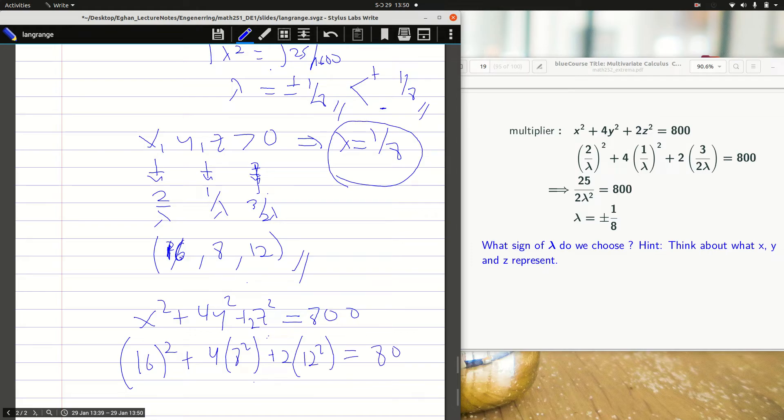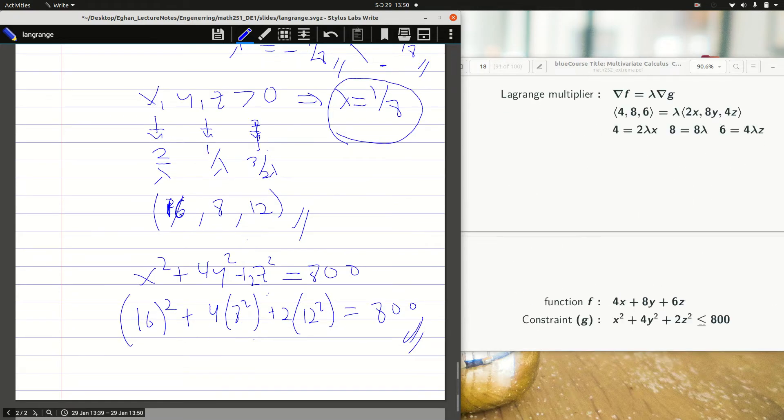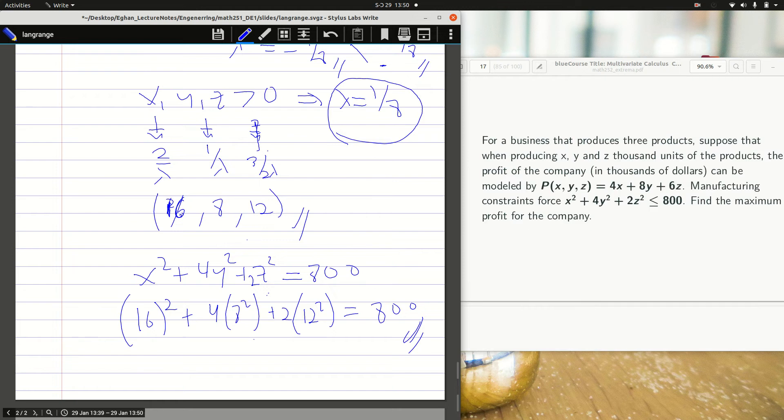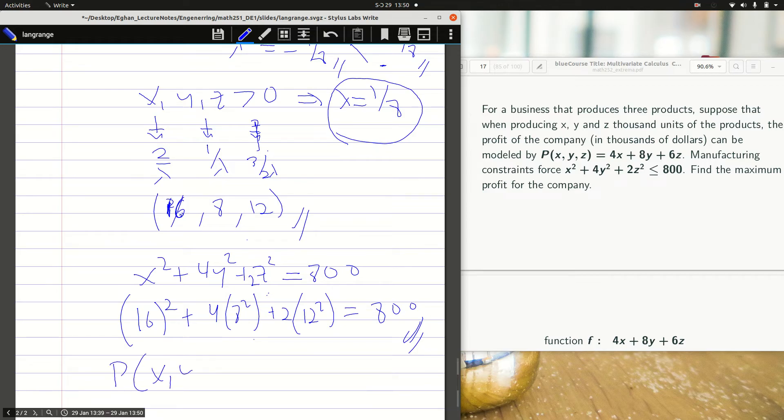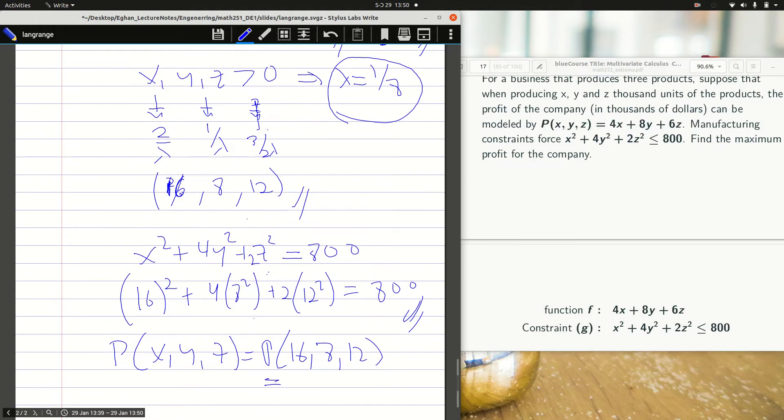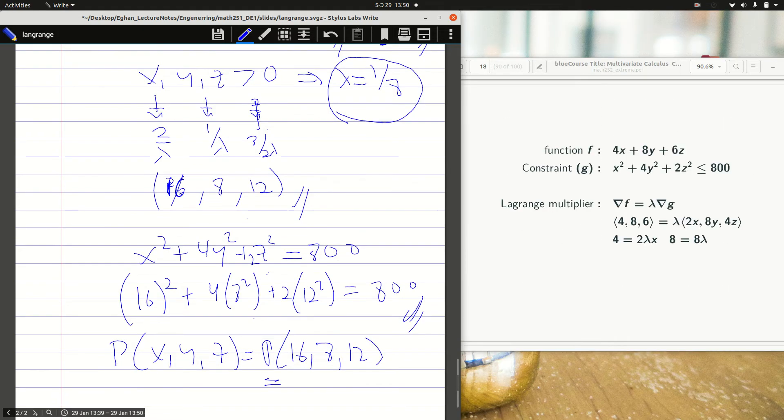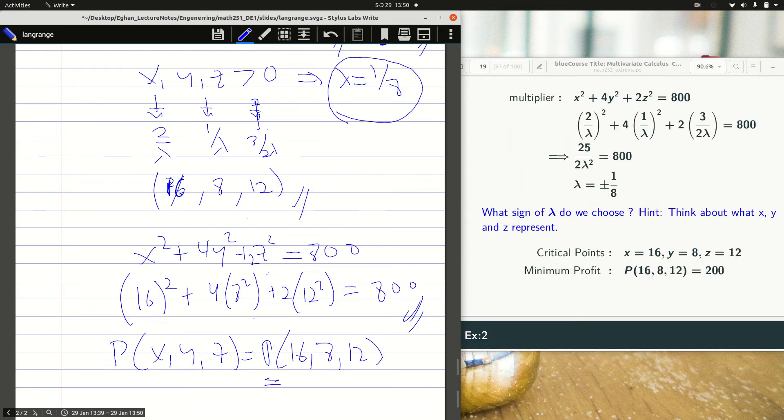But within answering the question not really, because we are asked to find the maximum profit of the company. It means that I am solving for P of XYZ with P of 16, 8, 12, and it says you are going to get some 2,400 as the maximum profit if I am right. We are not giving the currencies in thousands of units, so 200,000, that is it.